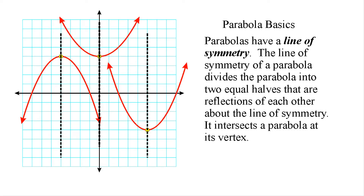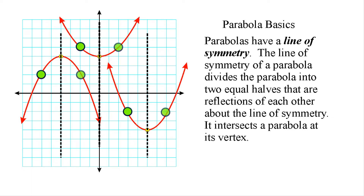Now, a line of symmetry is going to be very important for us because if we were to identify the location of a point on that parabola, we know that there is another point on that parabola that is just basically a reflection of that point. So for example, if you had a point that was two units to the left of your line of symmetry, then you're going to have a point that is equidistant, or two units to the right of your line of symmetry.